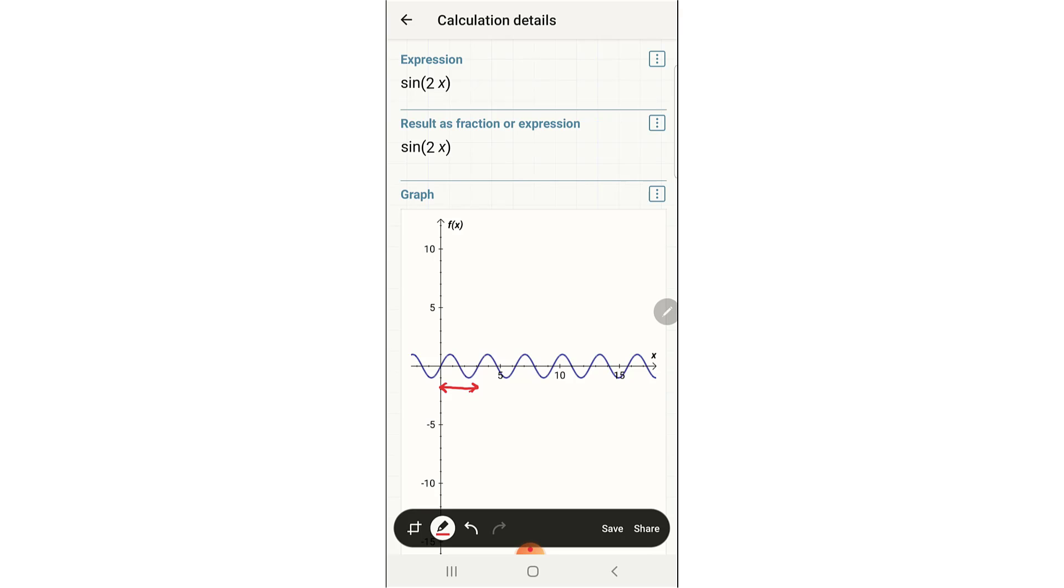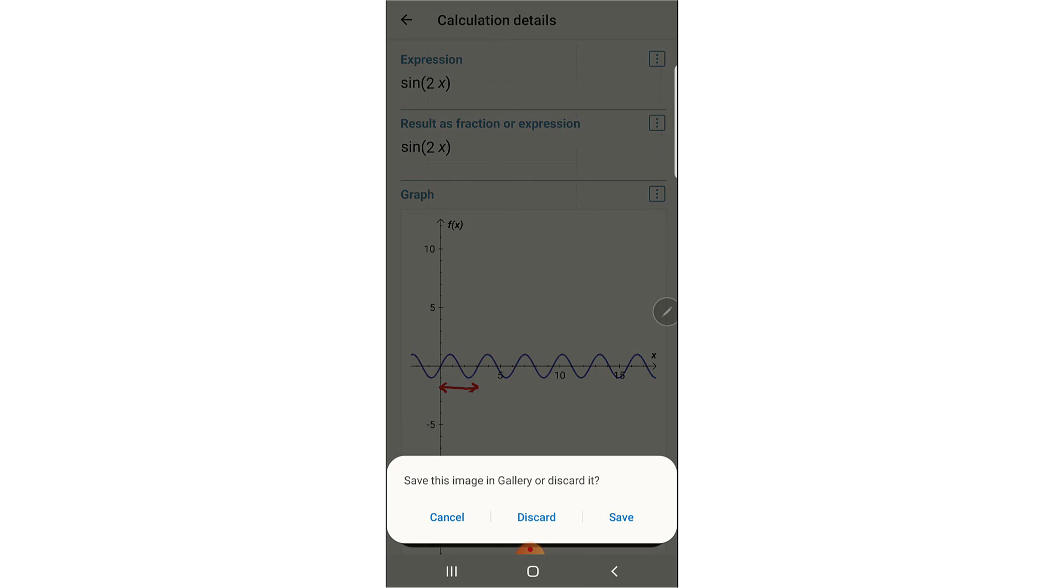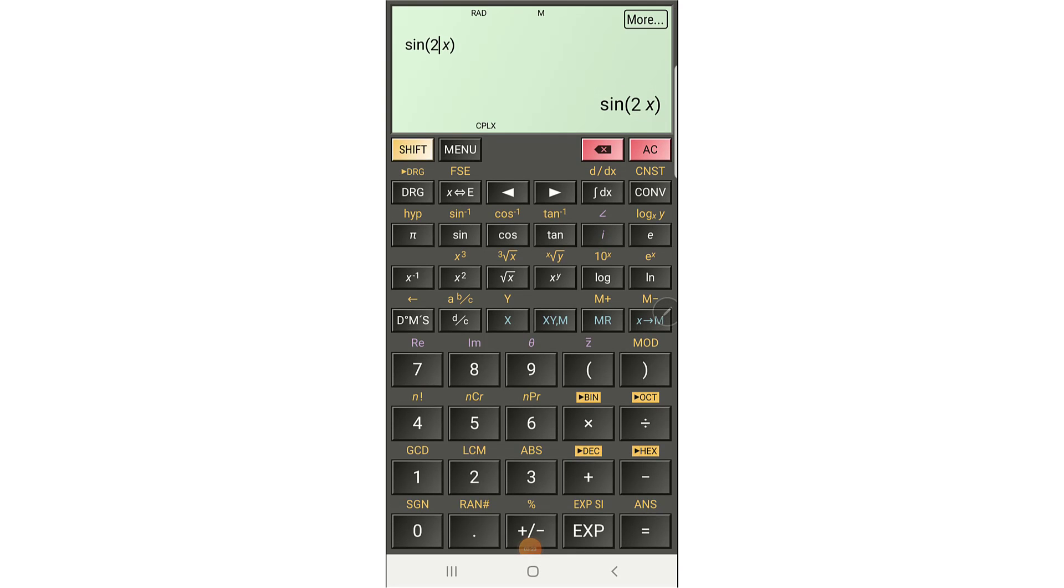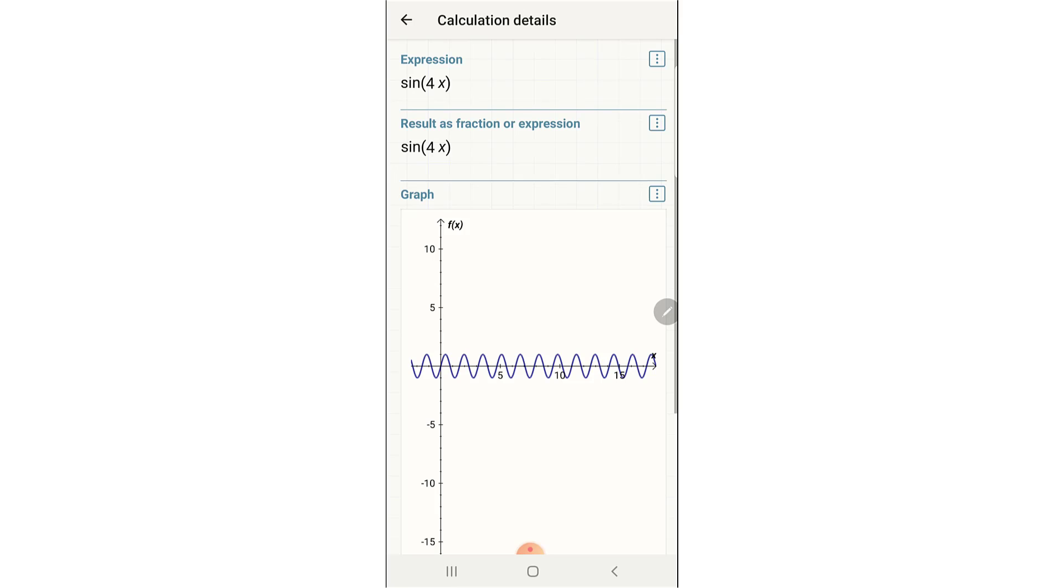Or even if you increase the coefficient to like four, you see frequency again increased or the wavelength or period decreased.